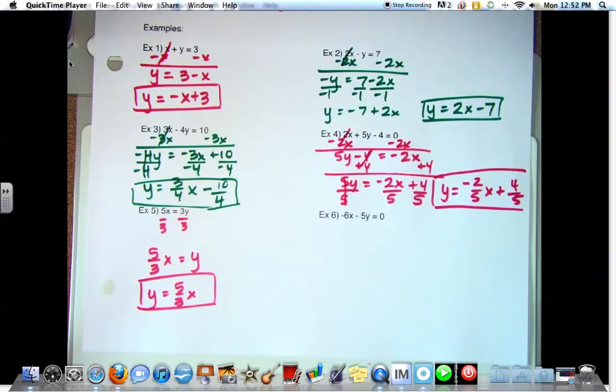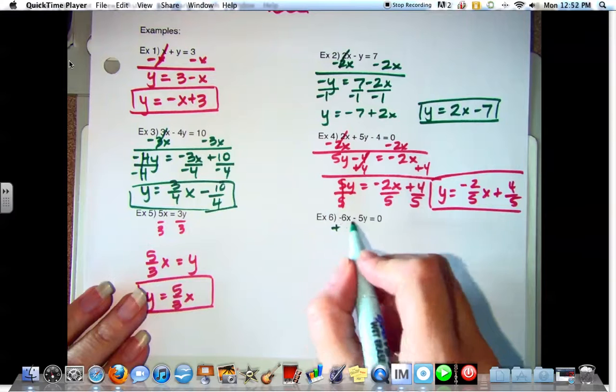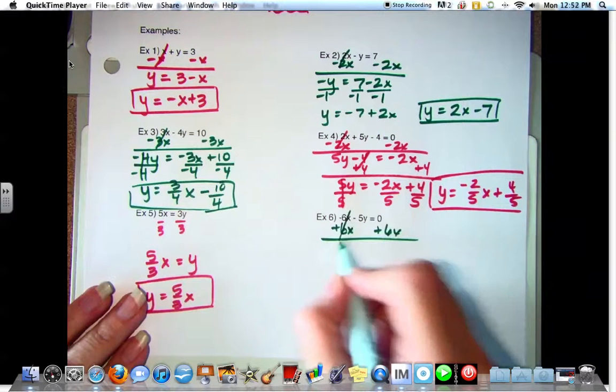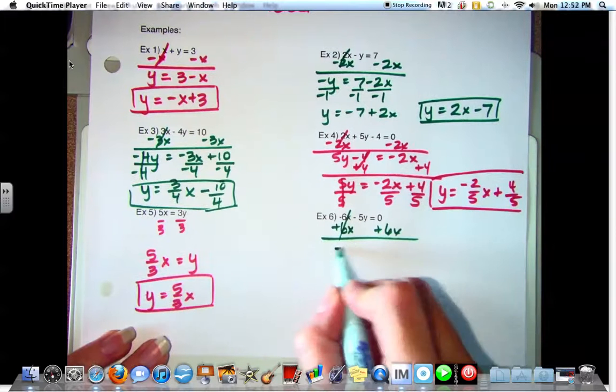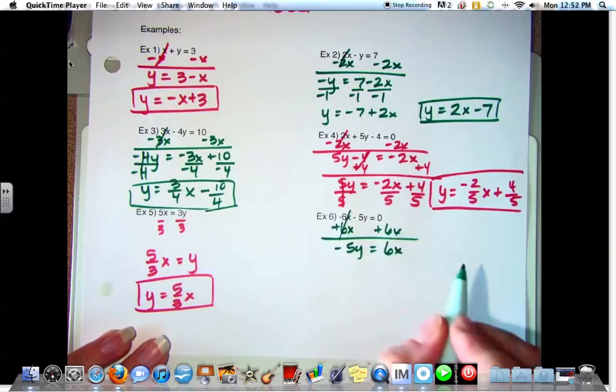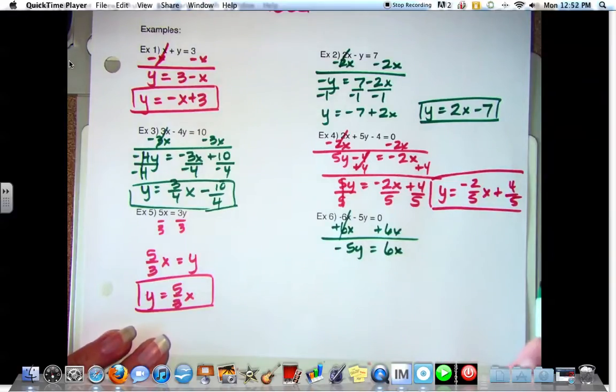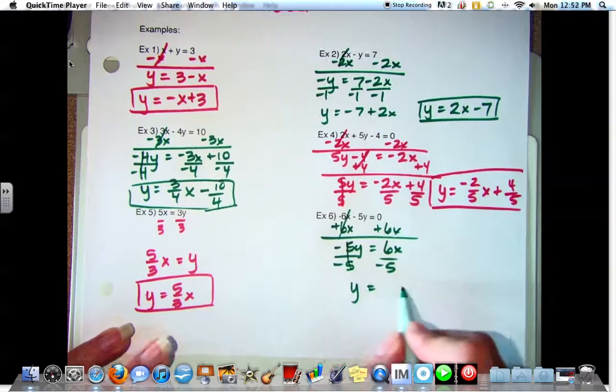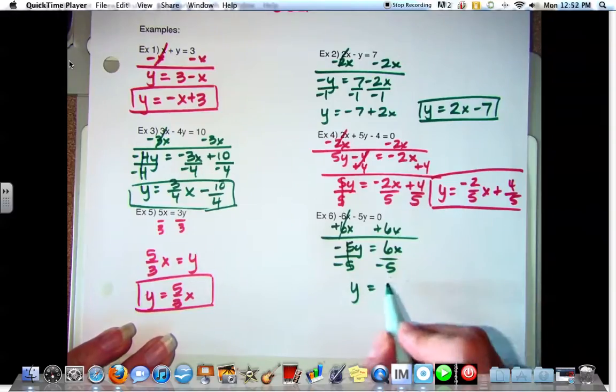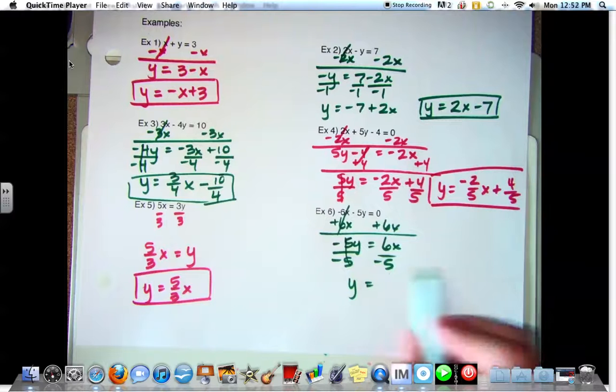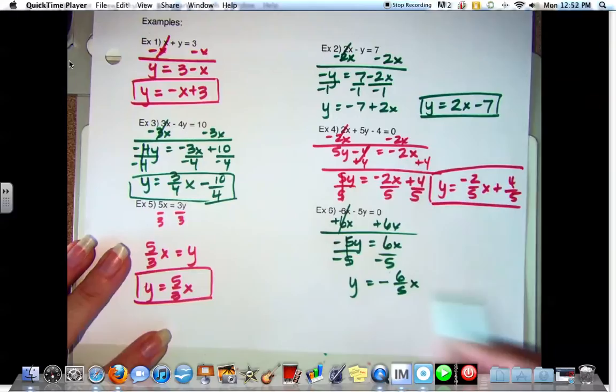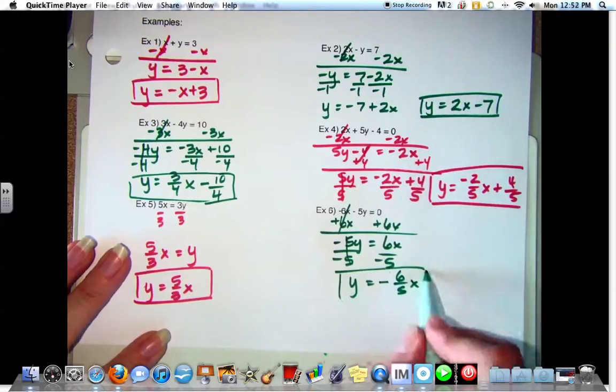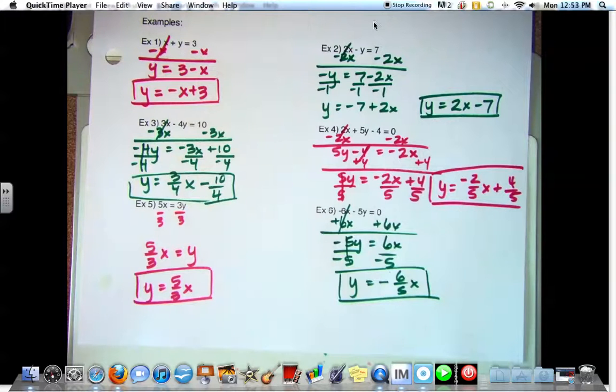Example six. We have negative six X minus five Y equals zero. What do you want to do? Add six X. So what do I have remaining on the left? Negative five Y equals six X. Divide by negative five. Negative five of the whole fraction X, or you can put six over negative five X.